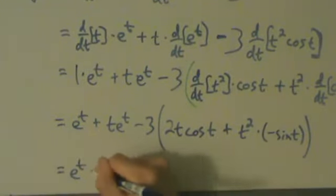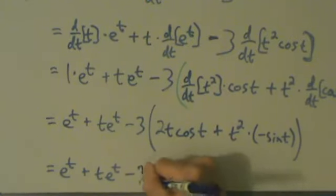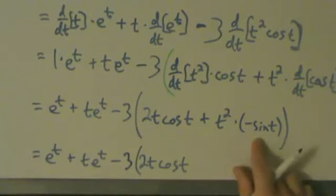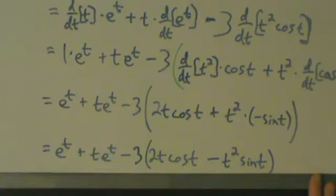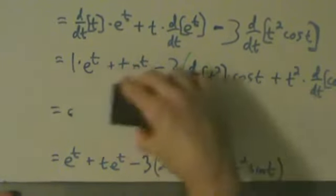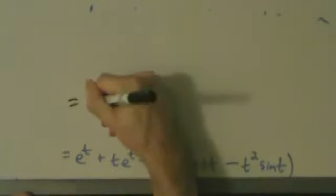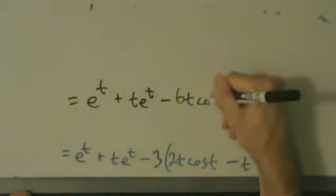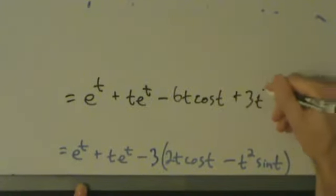So what we get is e to the t plus t·e to the t minus 3 times 2t cosine t. And then what's going to happen here — not plus but minus, so plus t squared times negative sine t, which becomes minus t squared sine t. Now let's distribute the negative 3 into here: that gives us minus 6t cosine t.